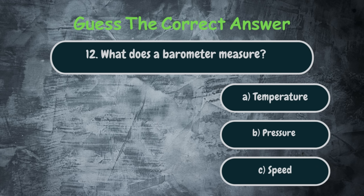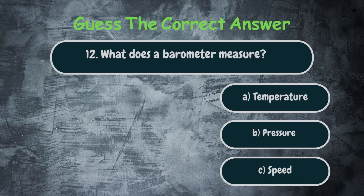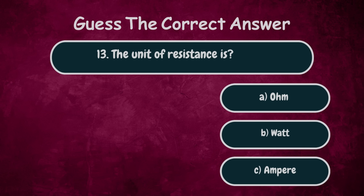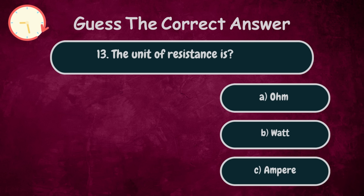What does a barometer measure? Option B. The unit of resistance is. Option A.